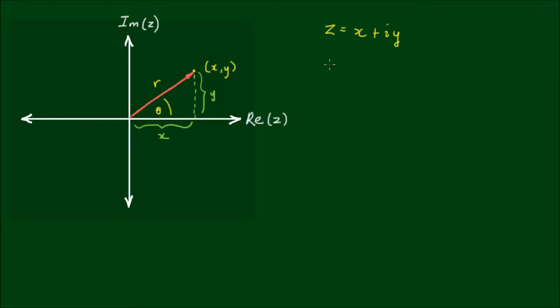So by Pythagoras' theorem, the length r is equal to the square root of x squared plus y squared. And we can also brand this as the modulus of z, or the magnitude of z.